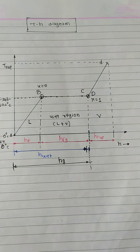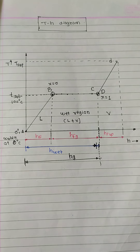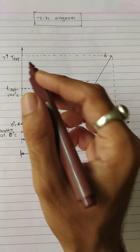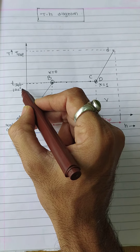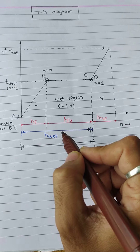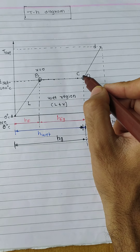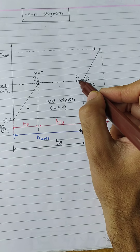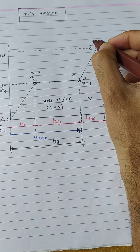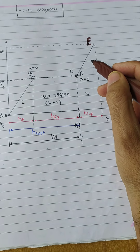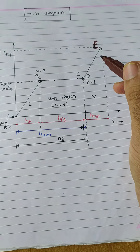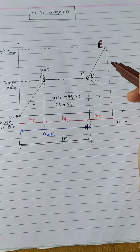From B to C, the evaporation of water starts at 100 degrees Celsius. At constant temperature, the evaporation of water is carried out. That is the latent heat, HFG. After point D, the region B to D is the wet region. After D to E, it is the superheated region — that is the sensible heat of superheated steam. The heat we can measure is the sensible heat, and the heat we cannot measure is the latent heat.